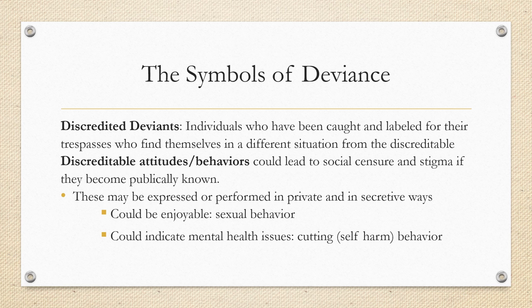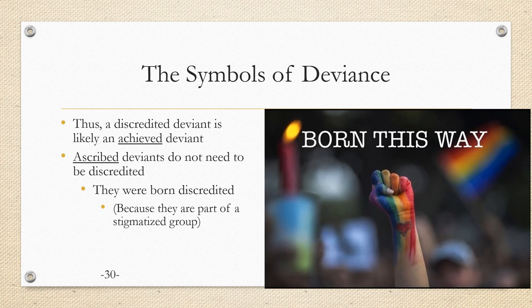The visibility or lack of visibility of these things isn't inherently bad — it really depends on what the thing is. A discredited deviant is likely to be an achieved deviant. An ascribed deviant does not need to be discredited — an ascribed deviant was born discredited, and usually ascribed deviants are part of stigmatized groups. What makes up stigma and how you become unstigmatized is a subject for another lecture. We're not saying this is necessarily a good thing; we're talking about the social structure as it exists. That is it for this lecture.